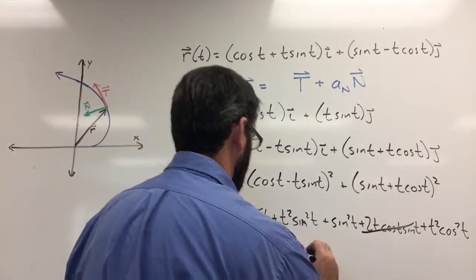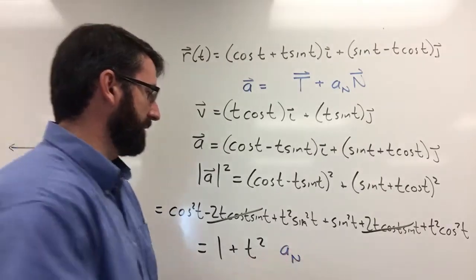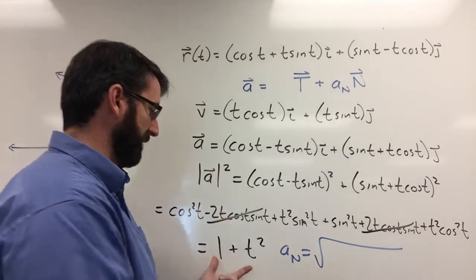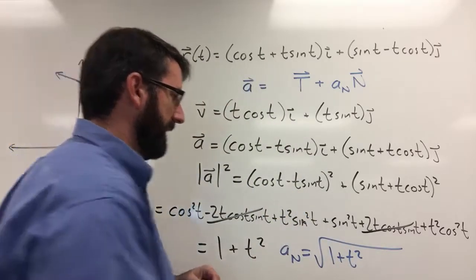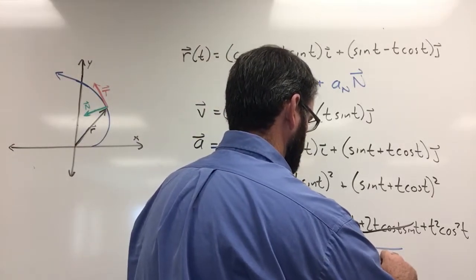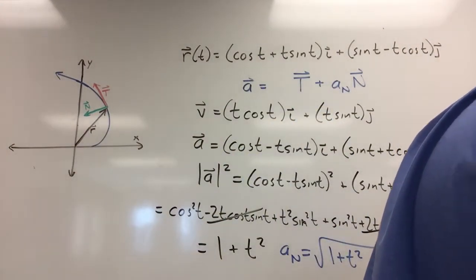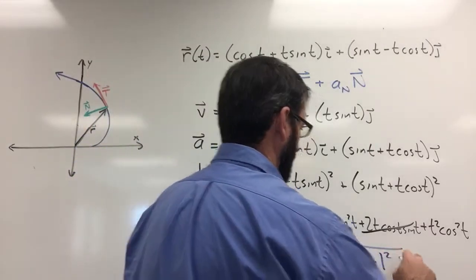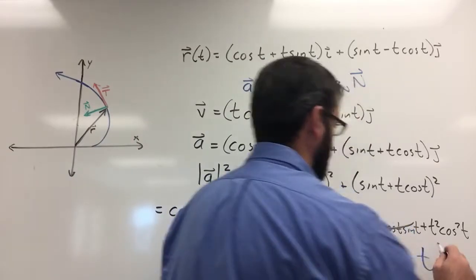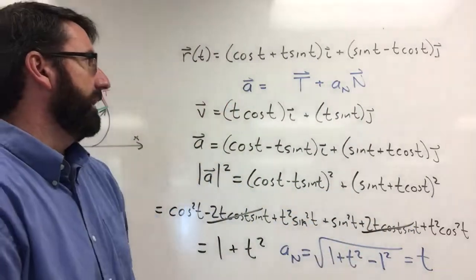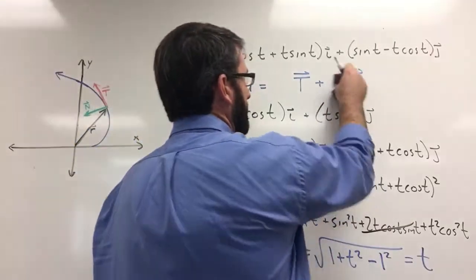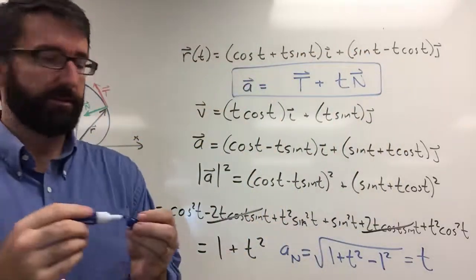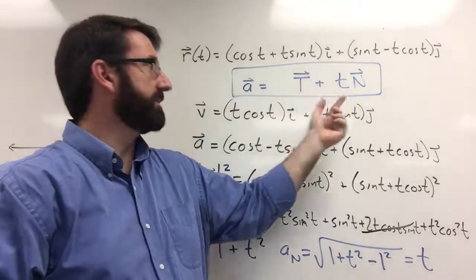Now we're ready to find the normal component of acceleration. A sub n equals the square root of the magnitude of the acceleration vector squared minus a sub t squared, which is the square root of 1 plus t squared minus 1 squared. This simplifies to the square root of t squared, which is t. So our normal component of acceleration is t. Plugging in, the acceleration vector is 1 times T plus t times N — acceleration expressed in terms of our unit tangent and unit normal vectors.